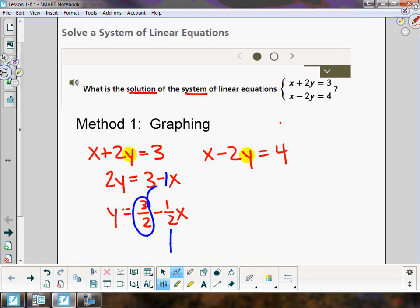This is going to be one equation that we put into our calculator. The other one, we're going to subtract x from both sides just like we did in the first one. This time we're going to divide everything by negative 2 to get that y by itself.